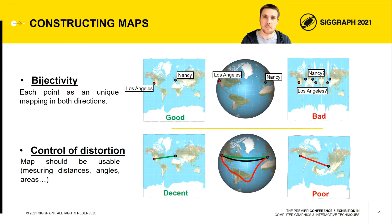When constructing maps, we look for two main properties: bijectivity and control of the distortion. In our paper, we bring a solution to construct maps that are bijective with still nice control of the distortion.